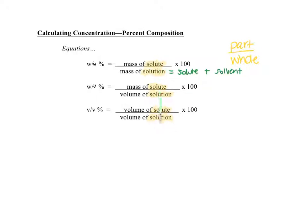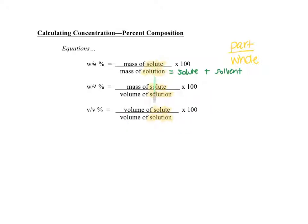The similarity across all three equations is that it's always solute over solution. The letters in the formulas tell you the units. W over W means weight over weight - mass of solute over mass of solution, where W means mass in grams. W over V is weight over volume - mass of solute over volume of solution. V over V is volume over volume. The letters tell you whether you're using mass or volume.